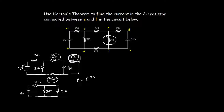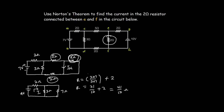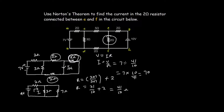From here we calculate the total resistance. That equals three times seven divided by three plus seven, which is 21/10, and this is in series with the two-ohm resistance, so plus two, giving 41/10 ohms total. From Ohm's law, the total current I equals V over R, which is seven divided by 41/10, that is seven times 10/41, giving I equal to 70/41 amperes.